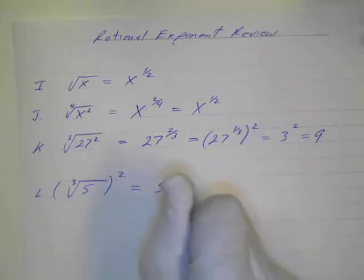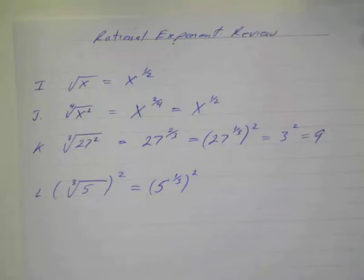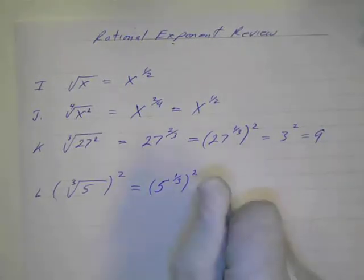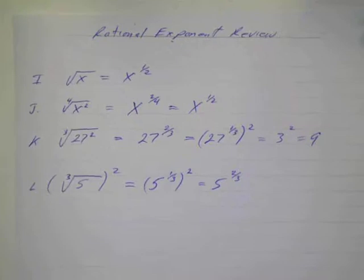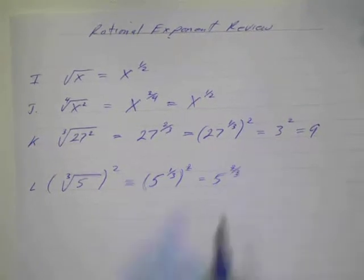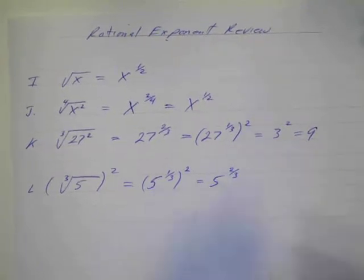I could write it like this, actually: 5 to the one-third squared. Now, we really couldn't simplify that, so if we write this as a fraction exponent, this would be the same thing as 5 to the two-thirds power. And there's not much we could do with that because we can't take the cube root of 5, so we could write it like that as a rational exponent.